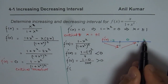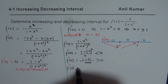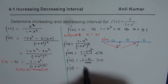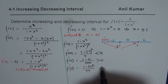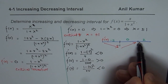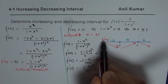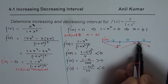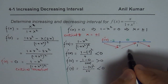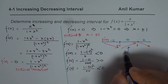Testing x = 2 for the interval (1, ∞): substituting gives 1 − 2² = 1 − 4 over something positive. This is less than 0, so f'(2) < 0. The derivative is negative, the slope is negative, and this gives us a decreasing interval.